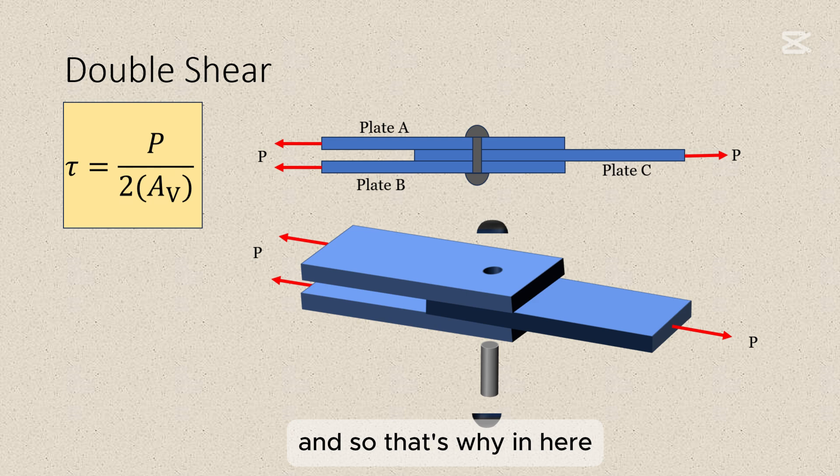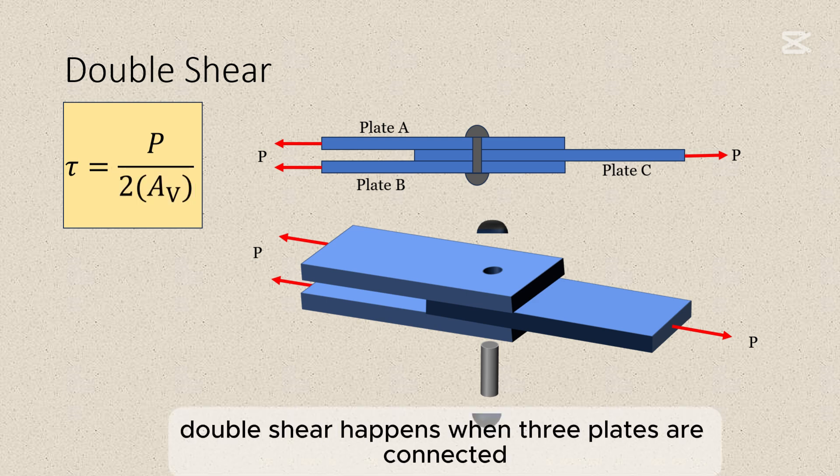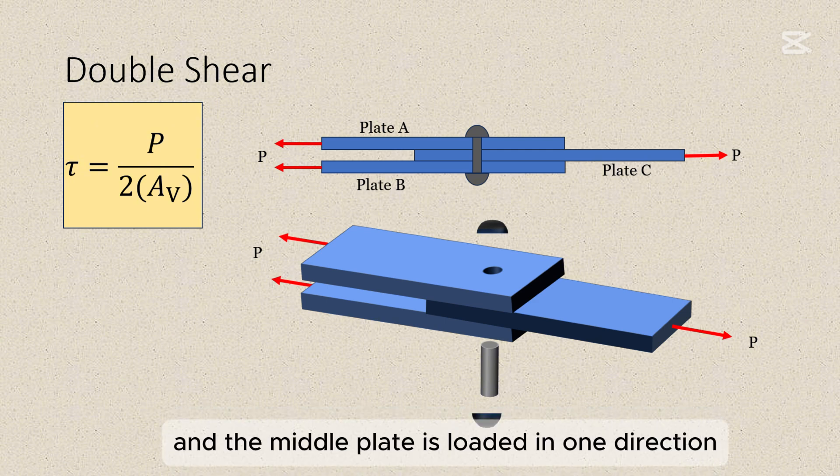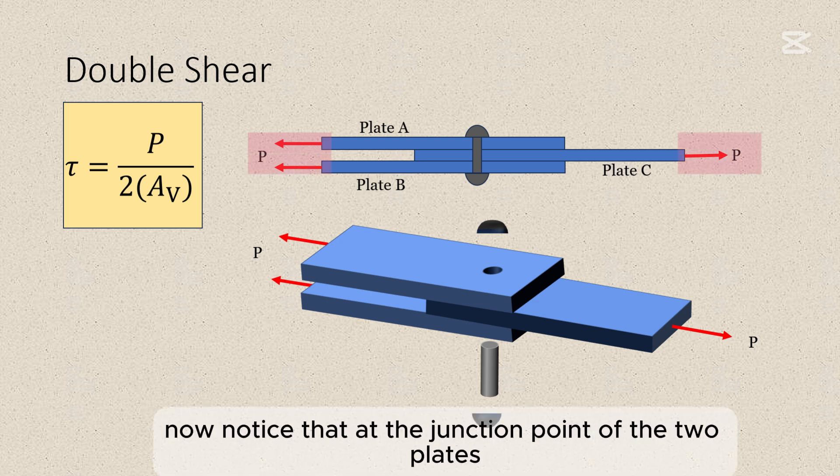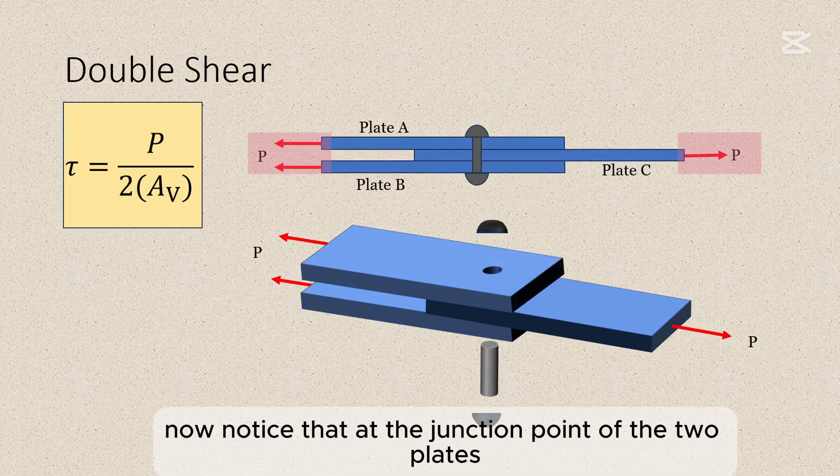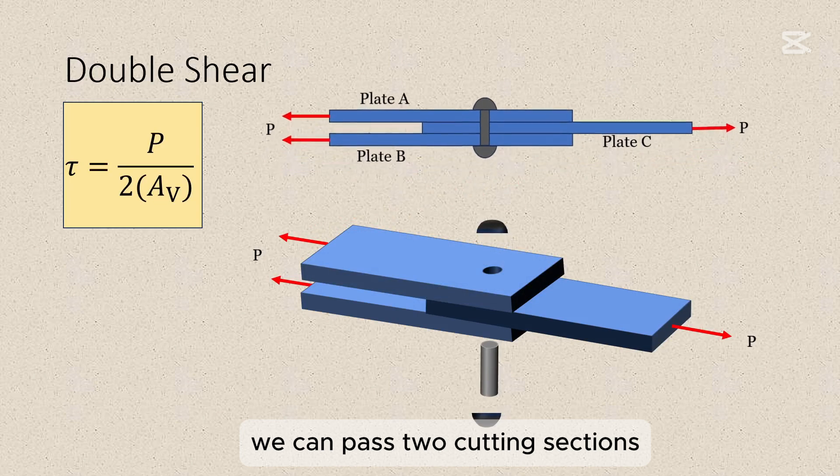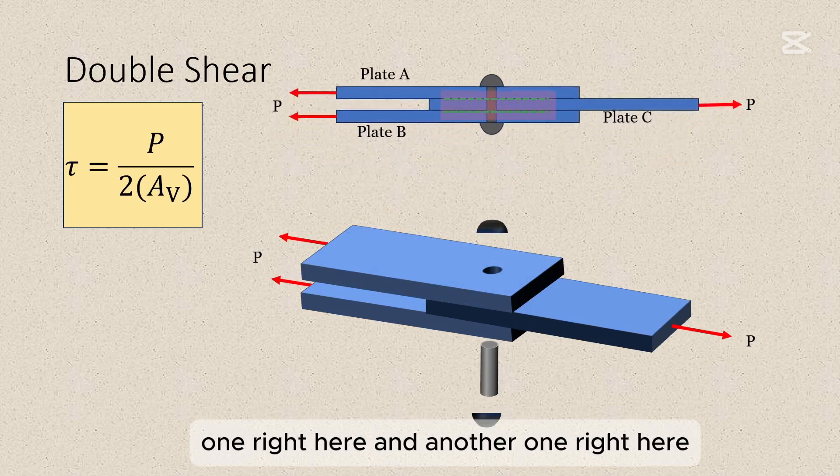And so that's why in here, we have two times the shear area, because we have two resisting shear areas. To simplify this, double shear happens when three plates are connected, and the middle plate is loaded in one direction, while the outer plates are loaded in the opposite direction. Now notice that at the junction point of the two plates, we can pass two cutting sections, one right here, and another one right here.